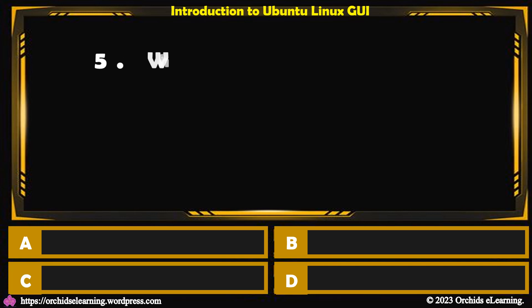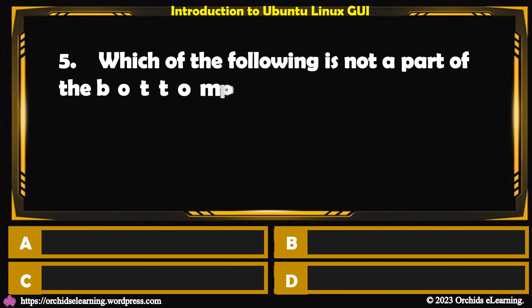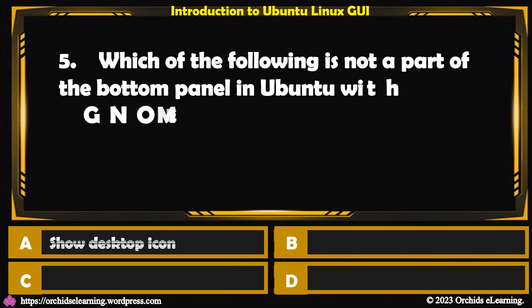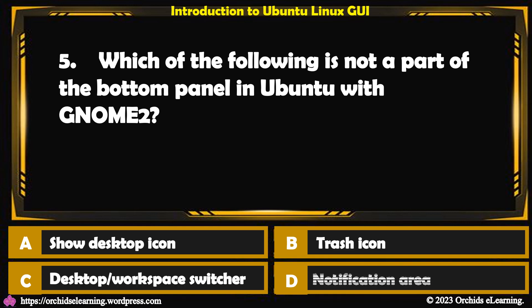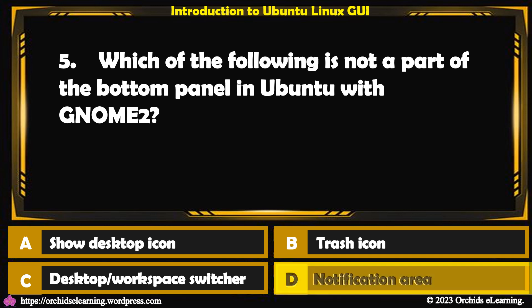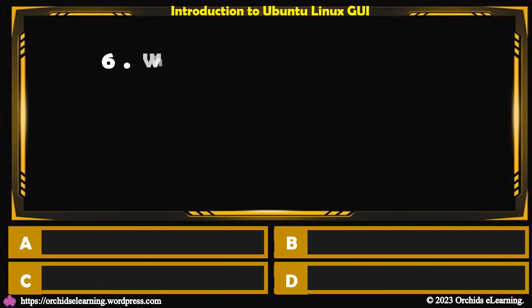Which of the following is not a part of the bottom panel in Ubuntu with Gnome 2? The answer is d. Notification area.